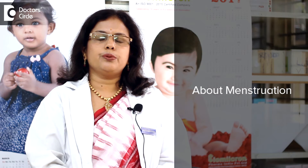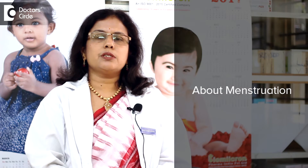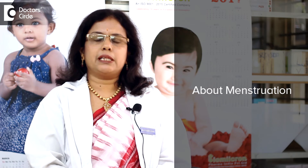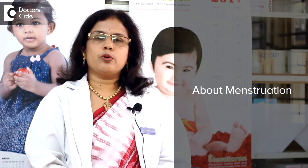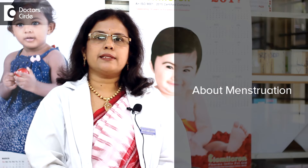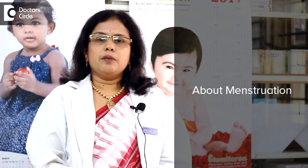Menstruation is the regular discharge of blood and mucosal tissue from the inner lining of the uterus through the vagina monthly. It contains bacteria, viruses, protozoans, microorganisms, parasites, fungi and chlamydia. Menstrual blood is likely to have the greatest bacterial contamination.